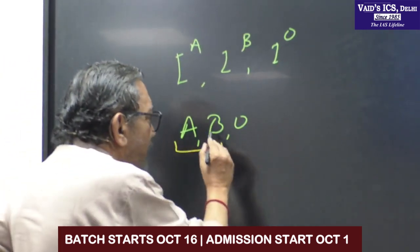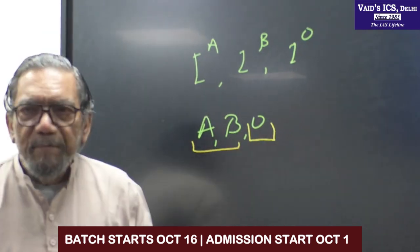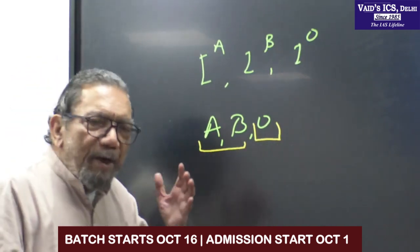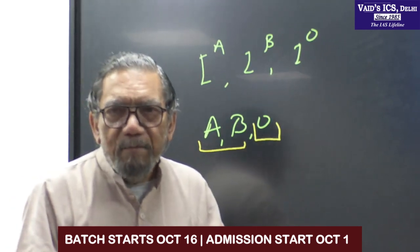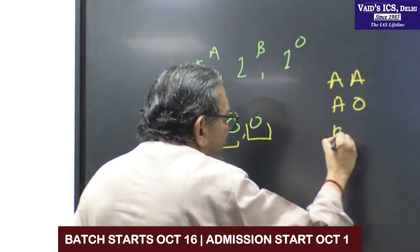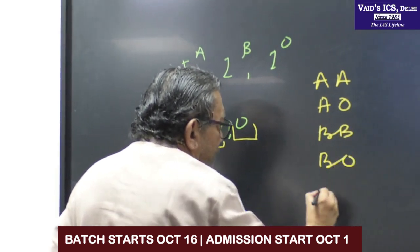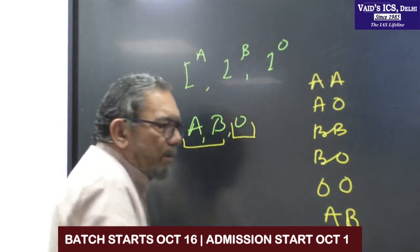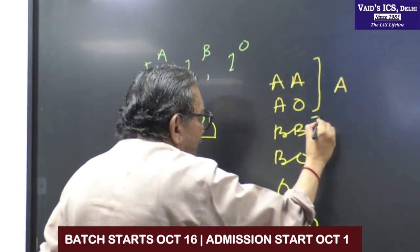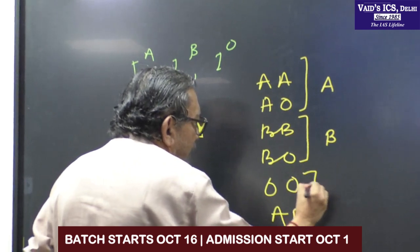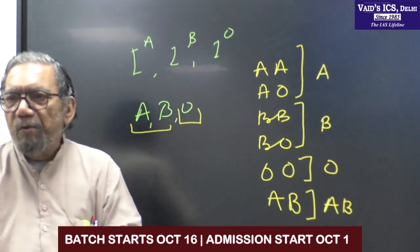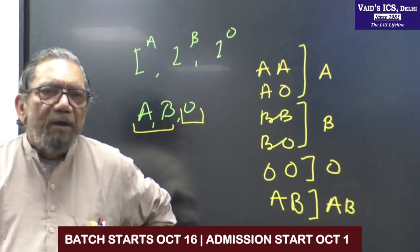A and B are dominant; O is recessive. They are autosomal. There are six genotypes genetically and nine statistically. A can be homozygous or heterozygous, B can be homozygous or heterozygous, O will always be homozygous, and AB will always be heterozygous.